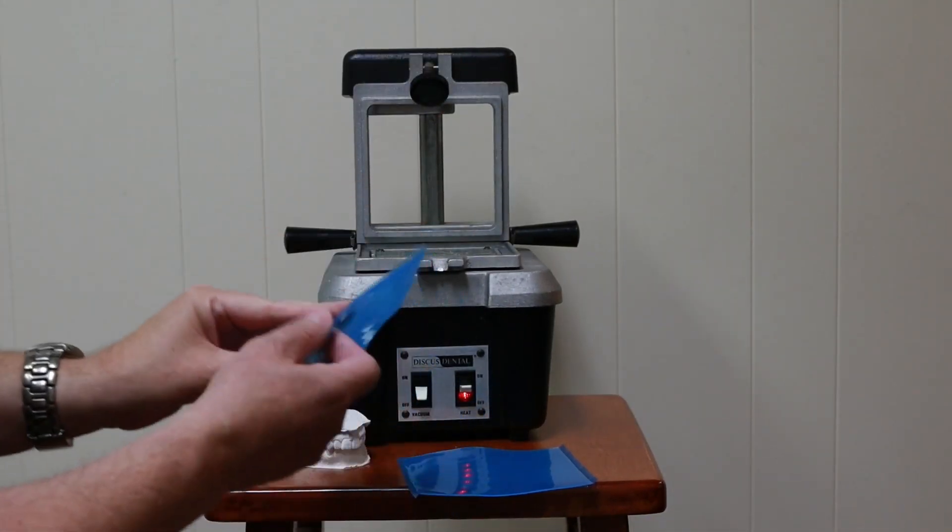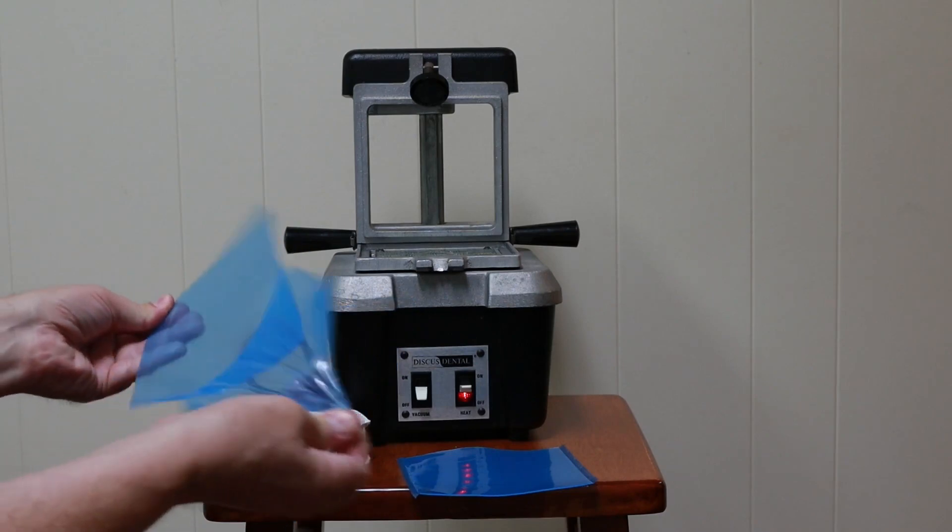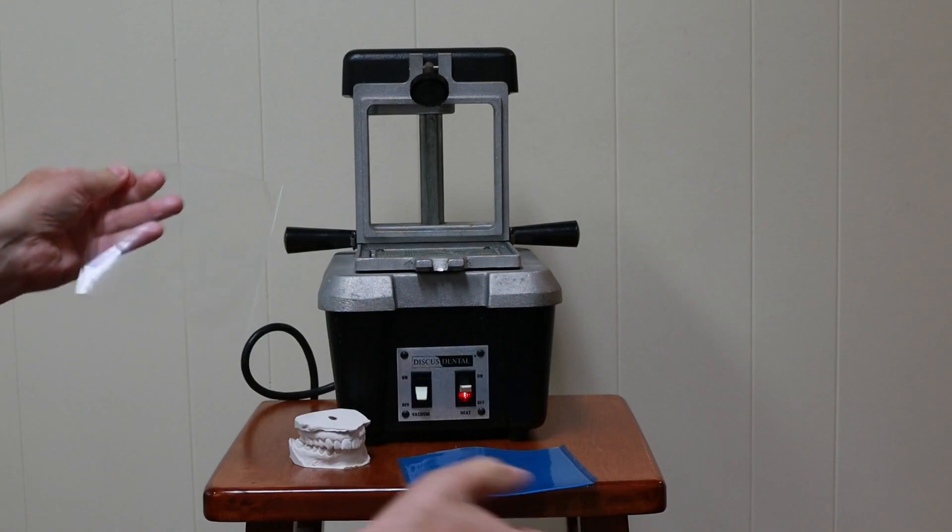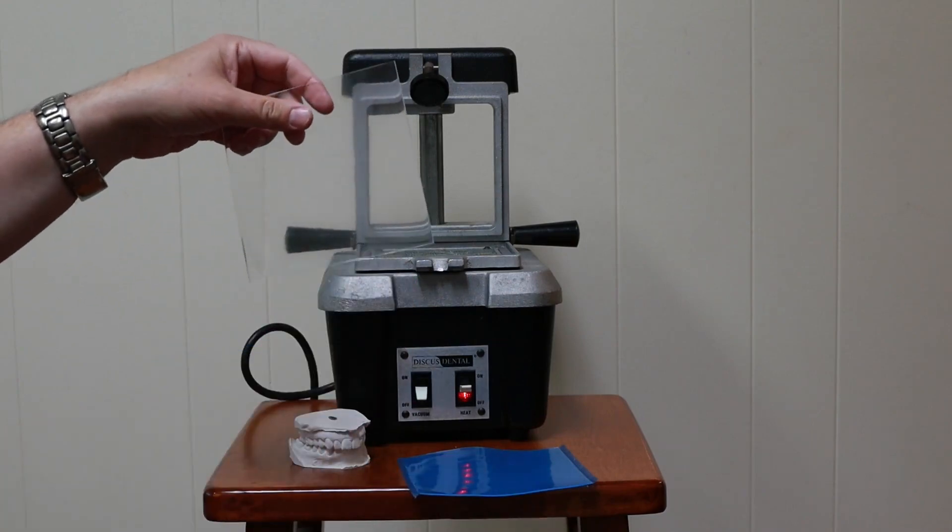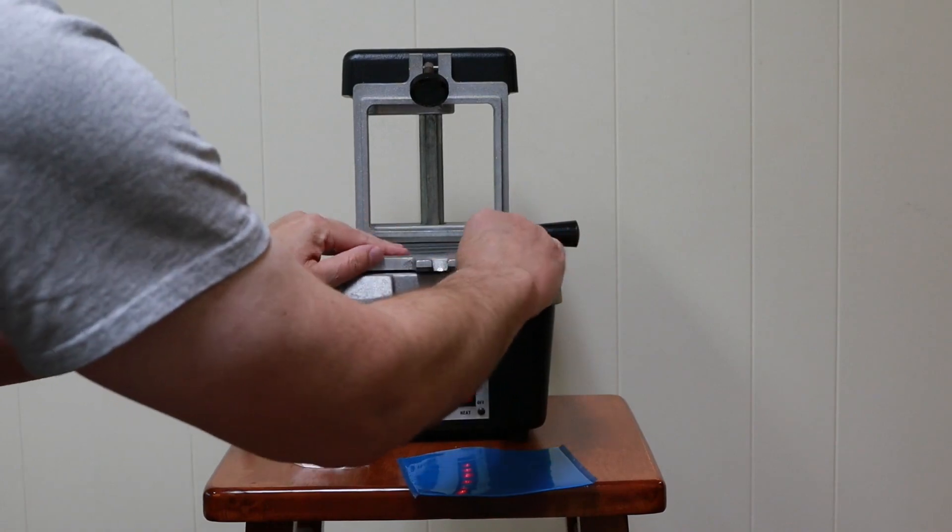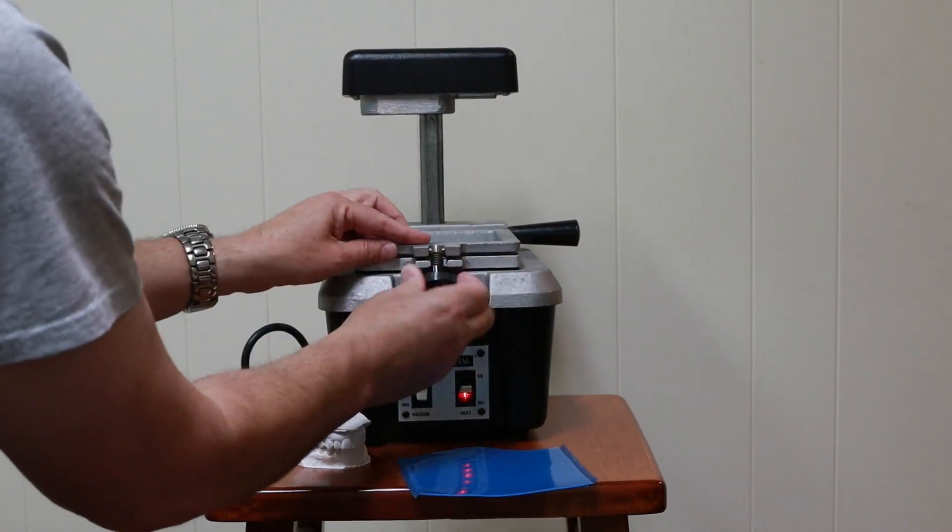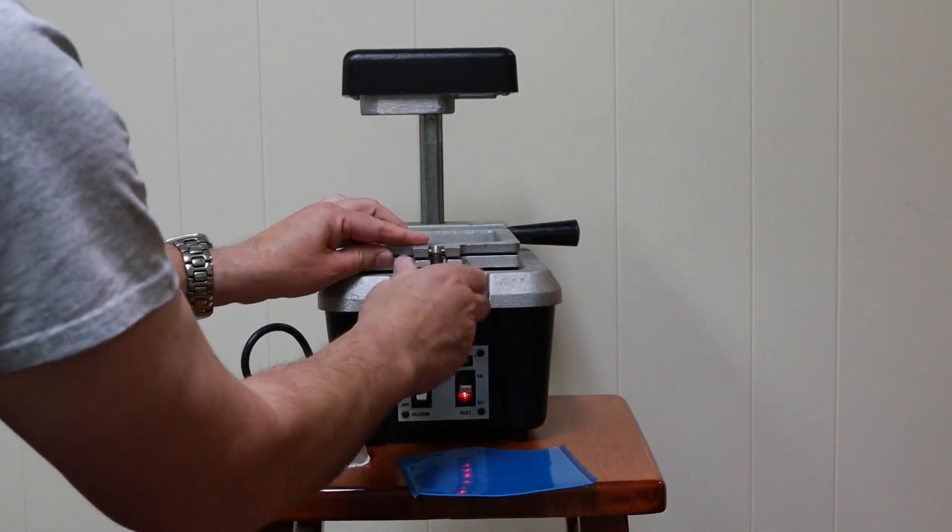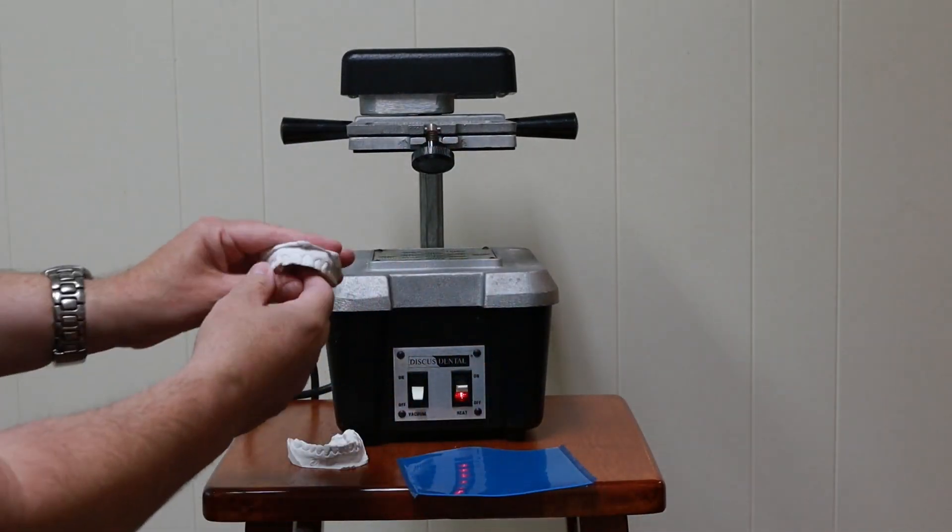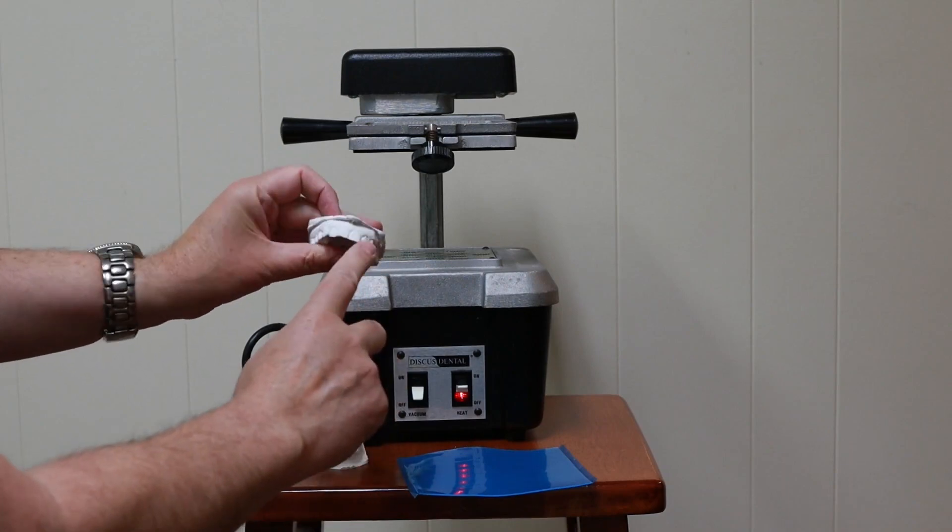This is the holder for the sheets. Let me get one of those. Got to peel off the protective plastic. Insert it in the vacuum forming machine. Cinch that down. Slide this up. And we'll do the upper model first.